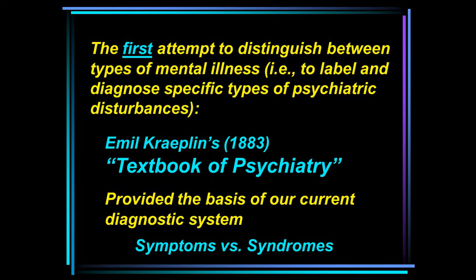Someone who received a particular psychiatric diagnosis might show some of those symptoms but not necessarily all of the symptoms in a cluster. For instance, take schizophrenia. We can think of schizophrenia as a syndrome, and there are a variety of symptoms associated with it. But not every person diagnosed with schizophrenia shows all the symptoms — some show certain symptoms, others show different ones. But when you look at how symptoms cluster together within a population, they appear to be part of the same psychiatric problem.